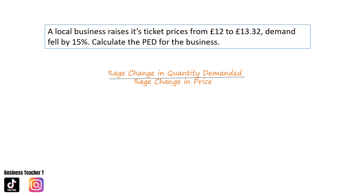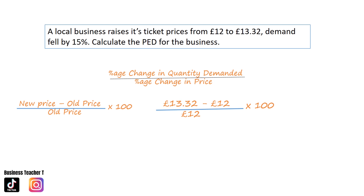Here's a question that will require you to use percentage change. A local business raises its prices from £12 to £13.32. Demand fell by 15%. Calculate the price elasticity of demand. We use the formula: new price minus old price, divided by old price, times by 100 — that's £13.32 minus £12, divided by £12, times 100 — giving us 11%. We then input into our PED formula: minus 15 divided by 11, giving an answer of negative 1.36.